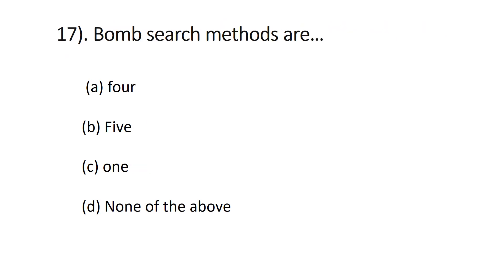Question number seventeen: bomb search methods are — four, five, one, or none of the above. There are five bomb search methods. If you want to know about all five, you can visit www.closecareer.com. The right answer is B, five.